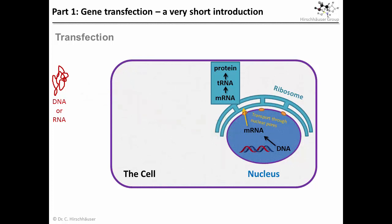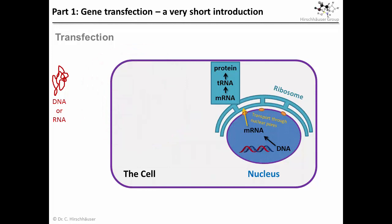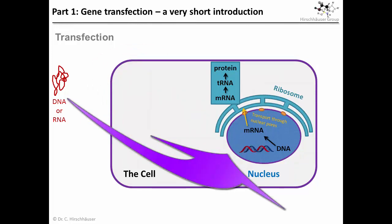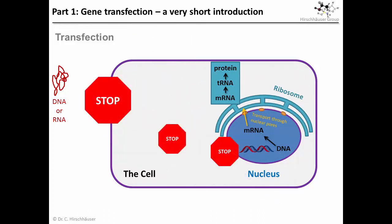If we would just add naked DNA molecules to a cell, nothing would happen, as cells haven't really evolved to process just any genetic material lying around. Otherwise, any old bit of genetic material could just hijack the cell's production capacity for its own good — for example, to manipulate the cell so that it makes more copies of the offending bit of information. This is precisely what a virus does. Therefore, cells have evolved several barriers that the DNA molecule has to overcome before its information can be read, transcribed and converted into proteins.